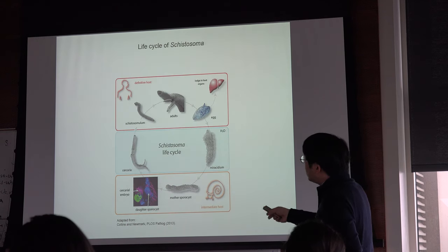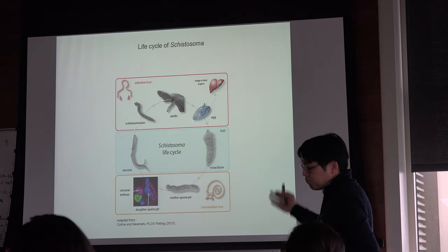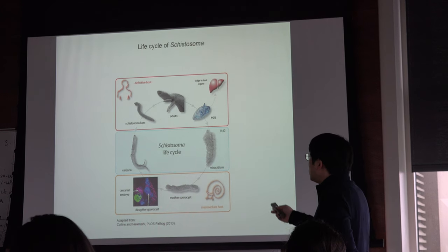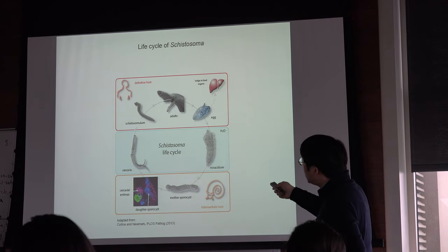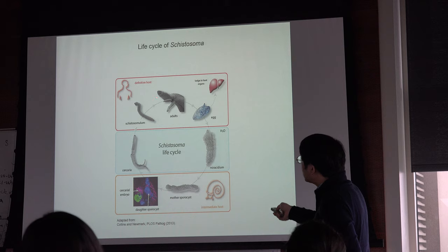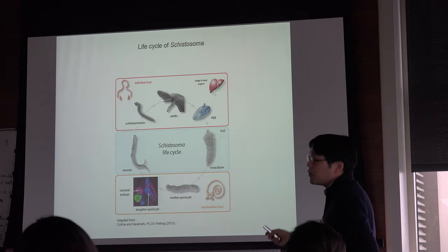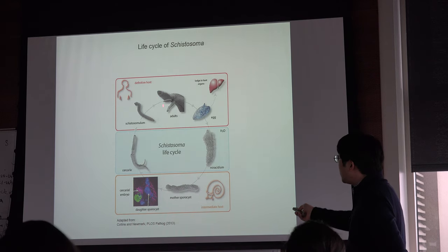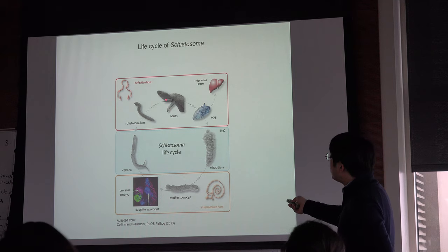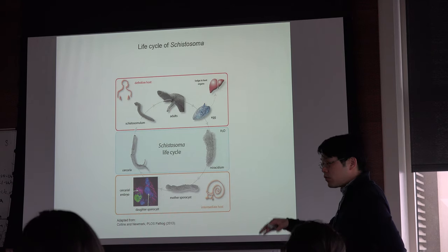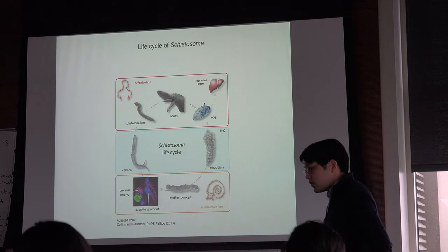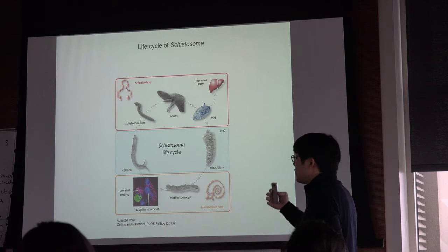These parasites maintain their life cycle by switching between two different hosts — definitive mammalian hosts and an intermediate snail host — and they deploy five different body plans throughout this life cycle, which is tremendously amazing biology.